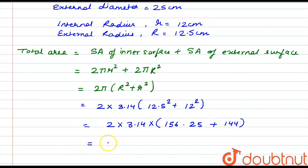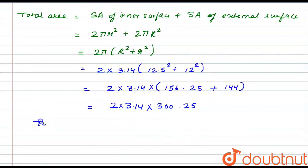On solving this, we have 2 into 3.14 into 300.25. So the total area to be painted would be 1885.57 cm².